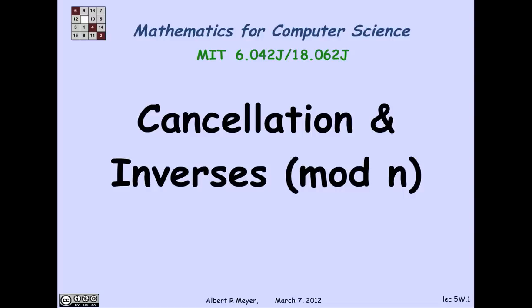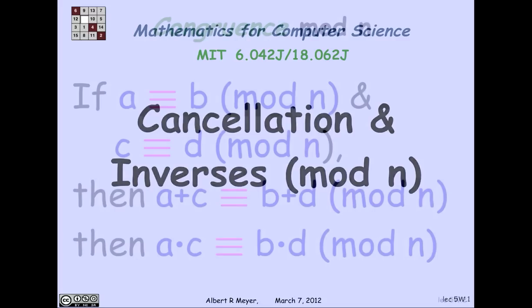So now we come to the place where arithmetic modulo n, or remainder arithmetic, starts to be a little bit different. And that involves taking inverses and canceling. Let's look at that.